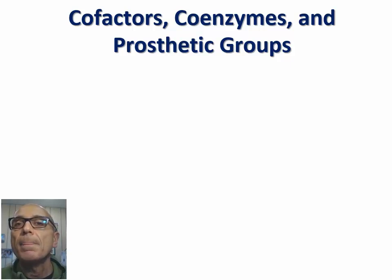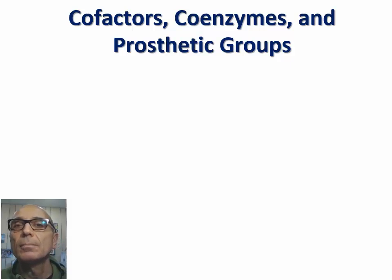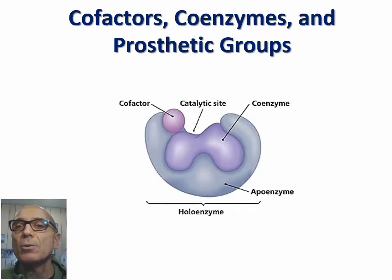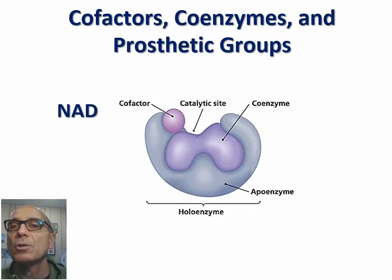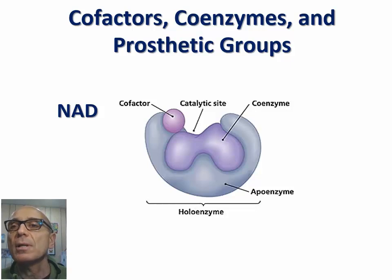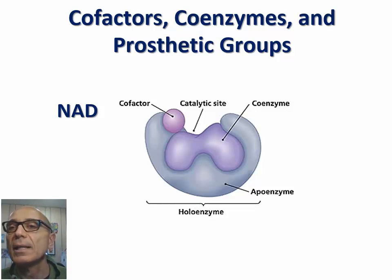Some enzymes require helpers in the form of additional molecules to function catalytically. Examples of these helpers include cofactors, which are inorganic molecules or ions that are essential for certain enzymes to function. A common example of cofactors are magnesium ions. Coenzymes are similar to cofactors but are inorganic in nature. They typically contribute to the catalytic reaction by acting as co-substrates, meaning they are changed by the reaction and therefore leave the enzyme active site upon completion of the reaction. An example of coenzymes are electron acceptors that are involved in accepting electrons from substrates that are oxidized by certain enzymes.